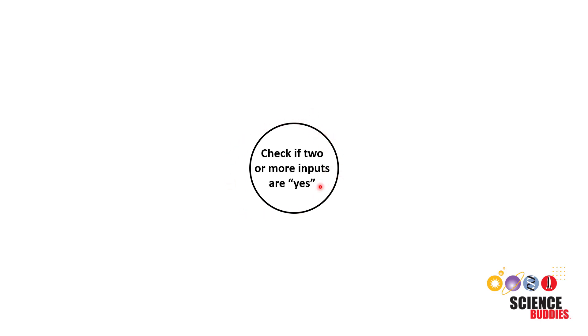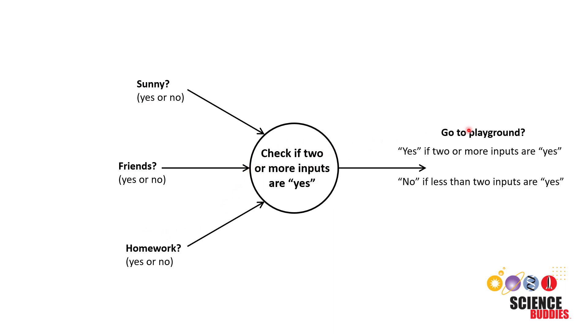Now let's switch back to the diagram we were using to represent a neural network and see how we could use it to represent this algorithm. Our algorithm is represented by this circle here where we are checking if two or more of our inputs are yes, and we have these three inputs, each of which can be yes or no. Our algorithm then has a single output for whether or not to go to the playground, which is yes if two or more of the inputs are yes and no if less than two inputs are yes.